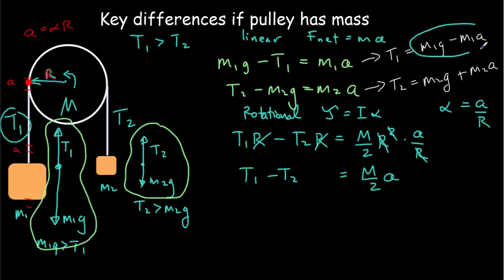We can then substitute these in for T1 and T2. M1g minus M1a minus M2g minus M2a.